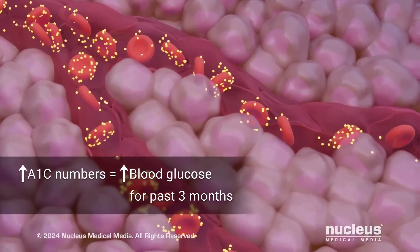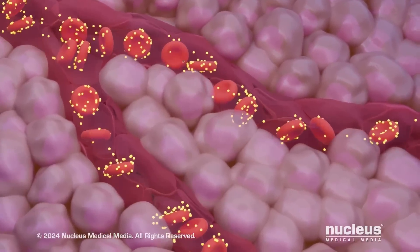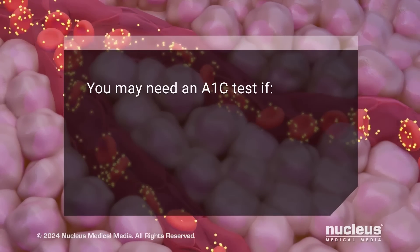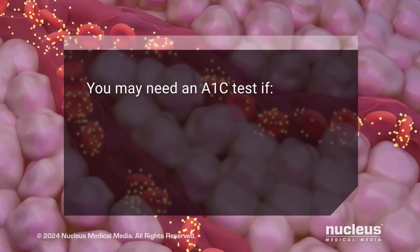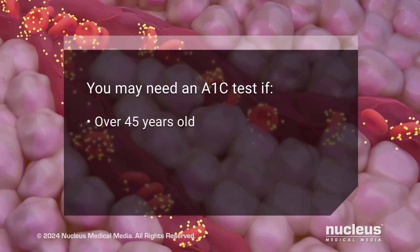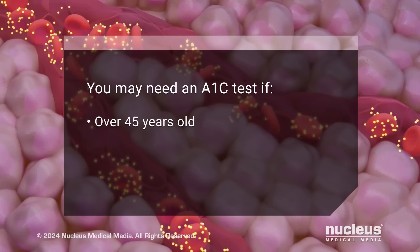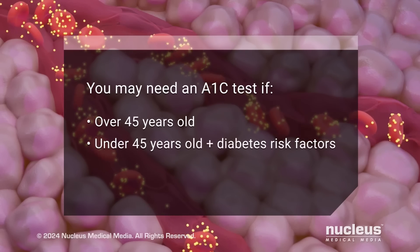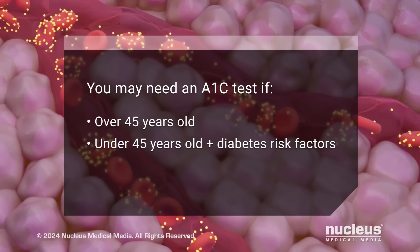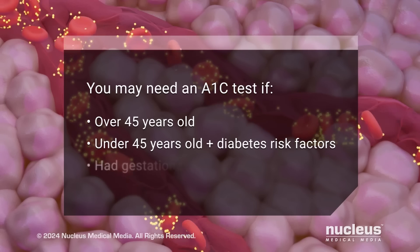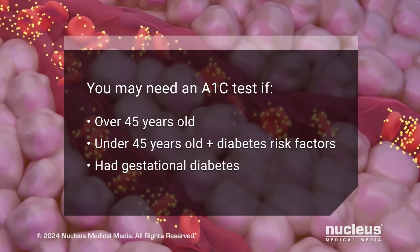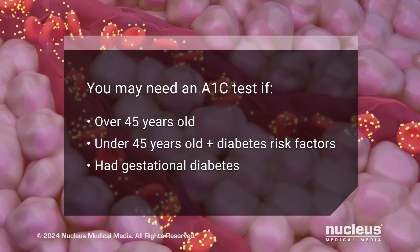Higher than normal average blood glucose can mean you have diabetes. Your healthcare practitioner may recommend you get an A1c test if you are over 45 years old, are under 45 and have one or more risk factors for diabetes, or you had diabetes during pregnancy, called gestational diabetes.